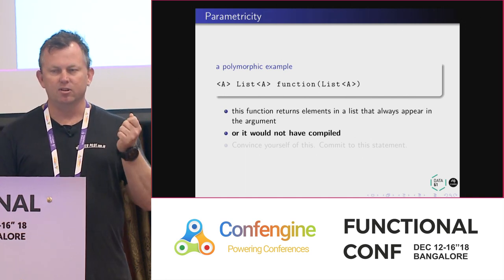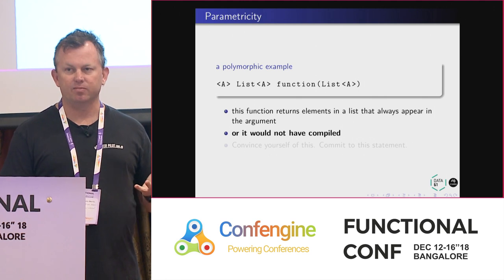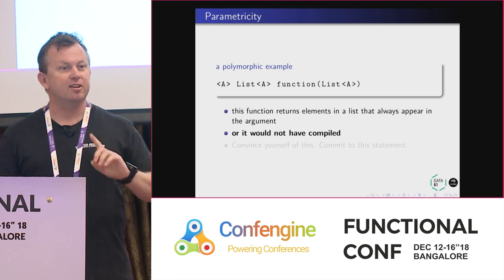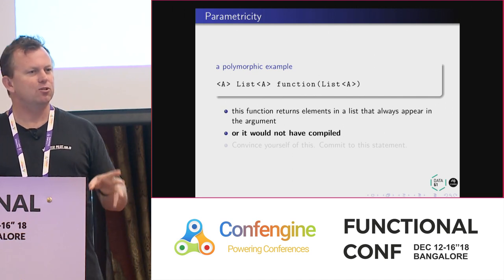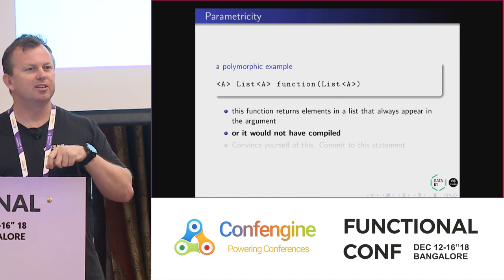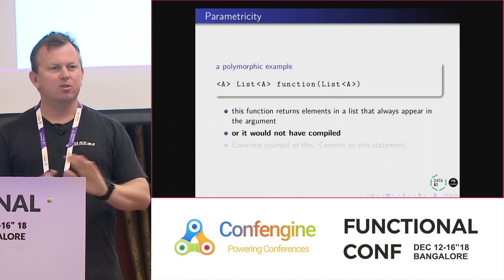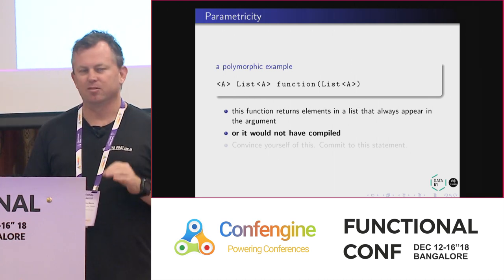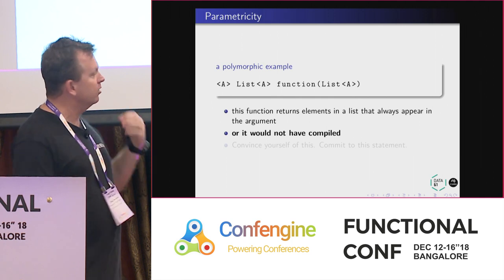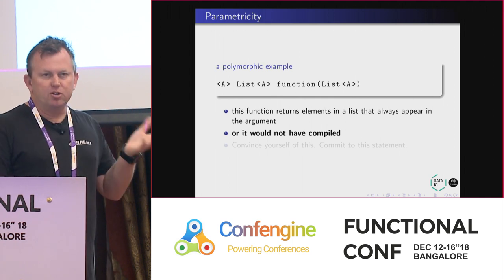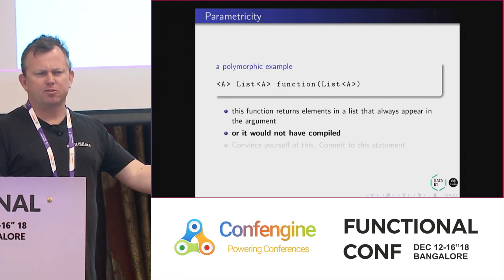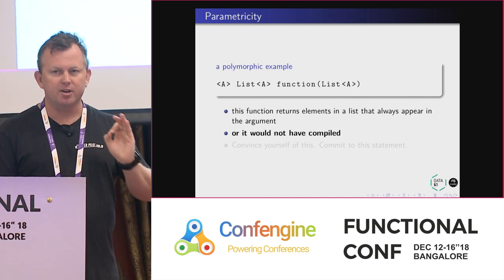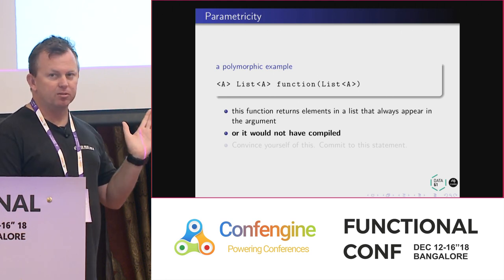I could have written this code yesterday when I was feeling a bit tired, and I come in today and look at it — I don't know what I did, but I know every element in the result appears in the input, immediately from the type. If I call not on the elements in that list, it will not compile — because they're A's, they're polymorphic. If I call negate, the compiler says you can't negate an A. The only thing I can do with those A's is shove them in the return list.